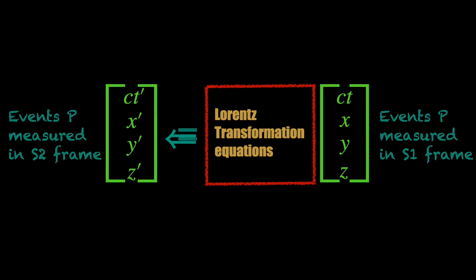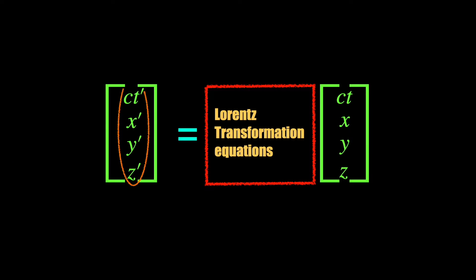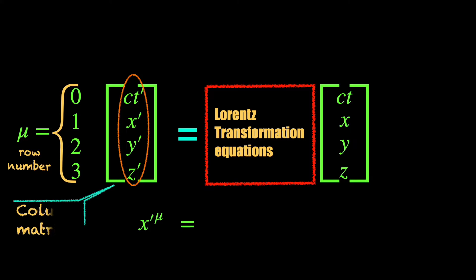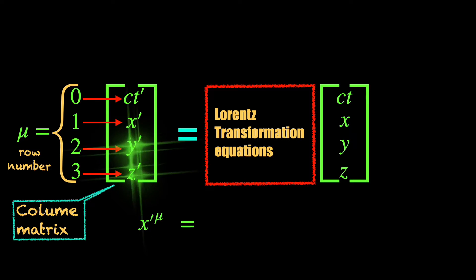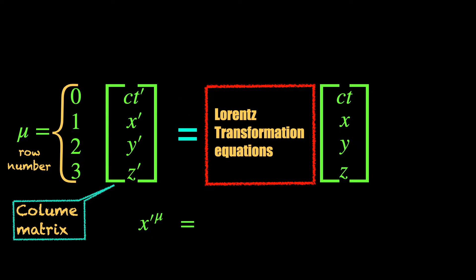The four spacetime coordinates in S2, the primed ones, are collectively written as x mu prime on the left. The superscript index mu takes four values indicating the four row entries of this 4 by 1 column matrix. 0 for the time coordinate ct prime and 1, 2 and 3 for the three spatial components x, y and z prime.